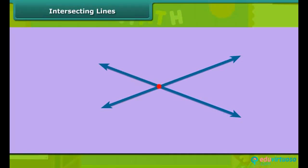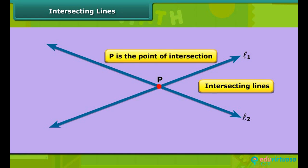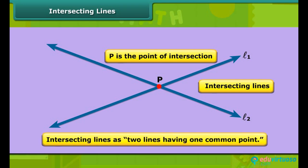Look at the figure. When two lines pass through a single point, we call them intersecting lines. Two lines L1 and L2 pass through a point P, then L1 and L2 are intersecting lines and P is the point of intersection. We can also define intersecting lines as two lines having one common point. A variety of examples around us has intersecting lines.